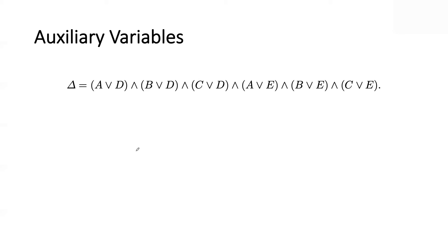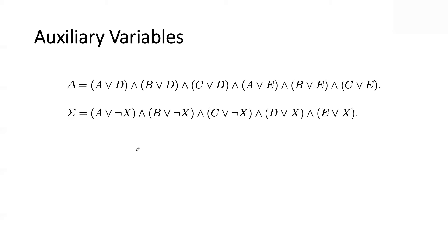Here's a knowledge base — a CNF over variables A, B, C, D, E. Let's say you're going to do SAT on this. I'm going to take this and add some variables to it. Why? Because I'm going to make it simpler as a result. I'll say, don't work with this — work with this extended version. Suddenly, there's a new variable X. This had 6 clauses, and the new one has 5. But the key question is: can I do SAT on this instead of the original?